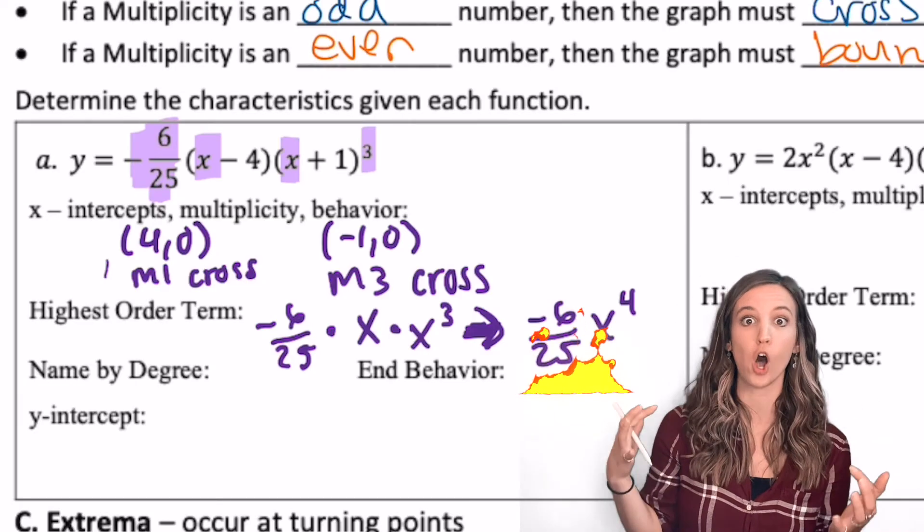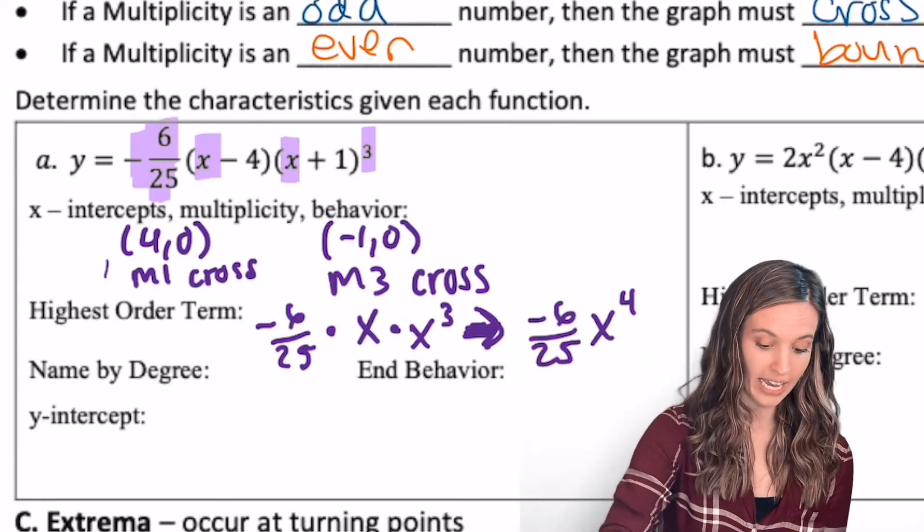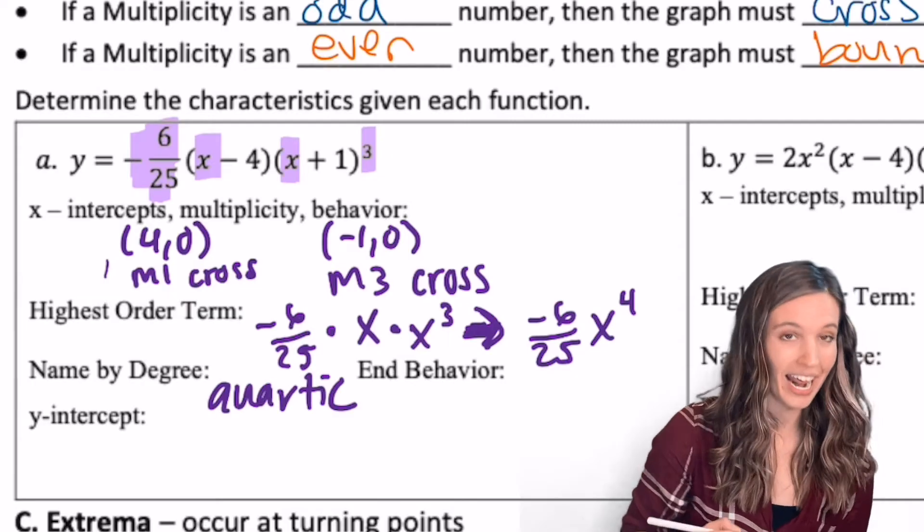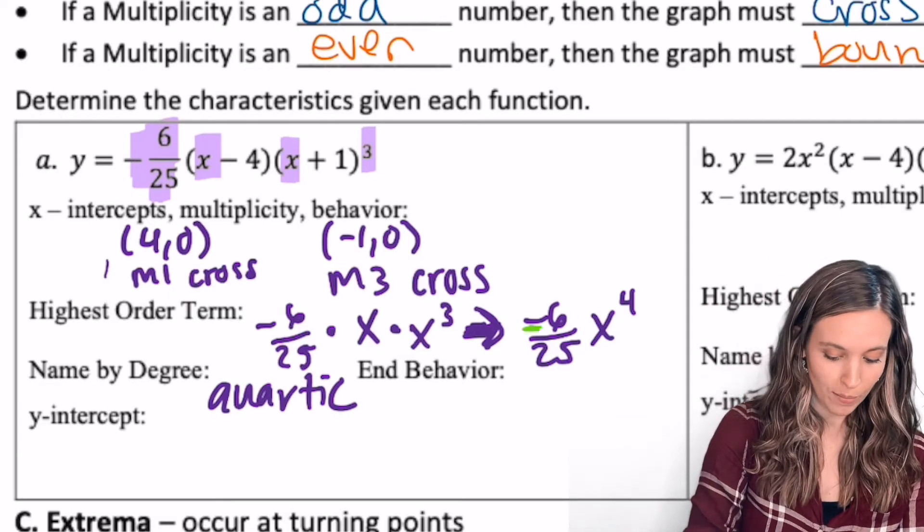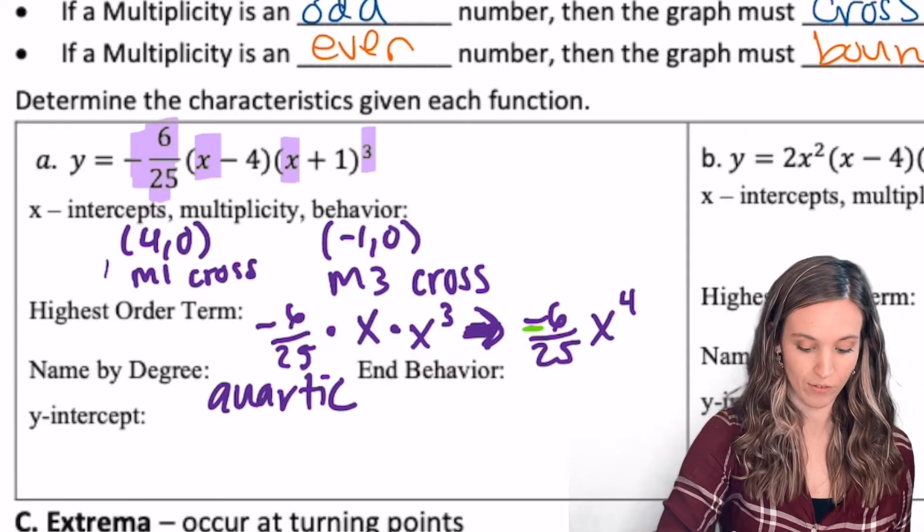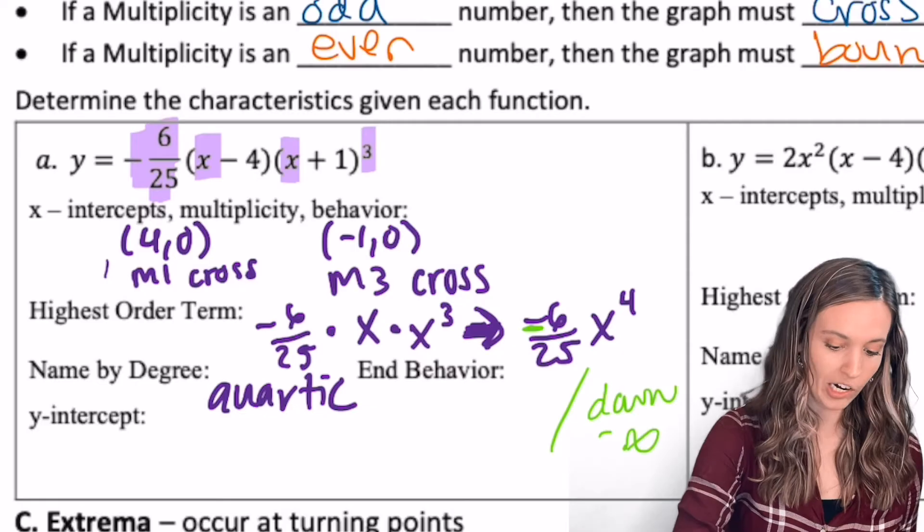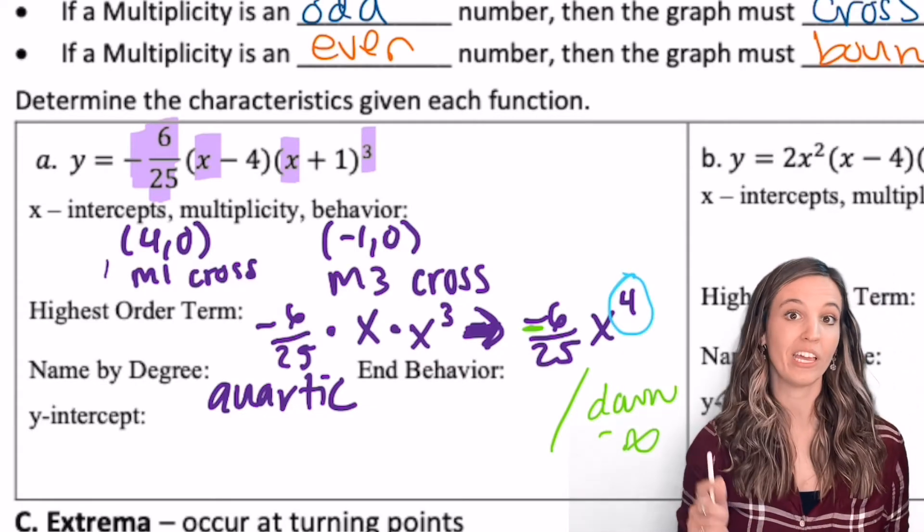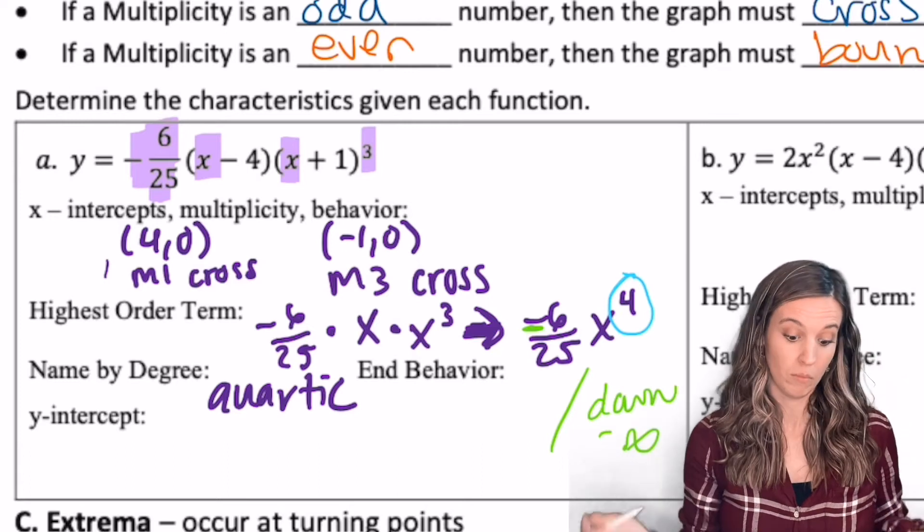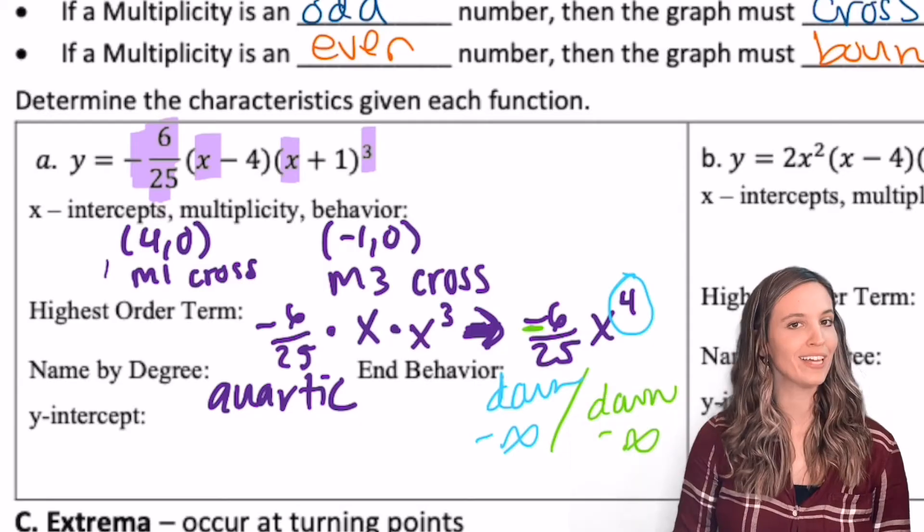Remember, this term tells me so much. It can right away tell me that my degree is 4, so I know that this is a quartic. And I can also determine my end behavior. The sign of my highest order term is negative, so I know my end behavior is headed down towards negative infinity. And then where did I start? My degree is even, so even same, so down. My end behavior is negative infinity, negative infinity. Down, down.